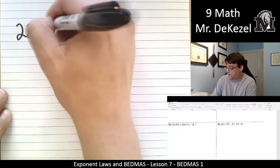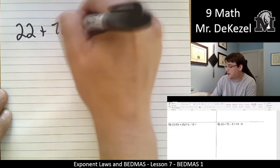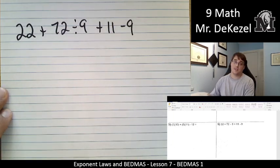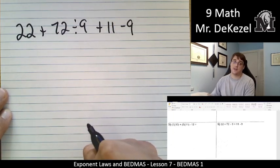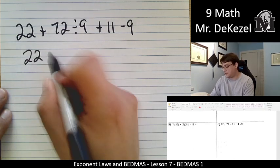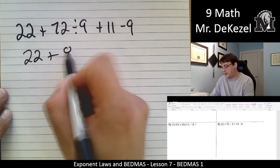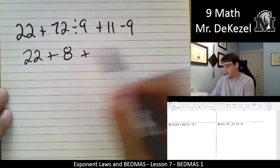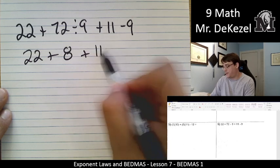22 plus 72 divided by 9 plus 11 minus 9. No brackets. No exponents. I do see some division. So let's go ahead and do that first. 22 stays. 72 divided by 9 is 8. Plus, we have 11 minus 9.